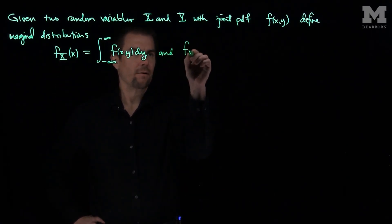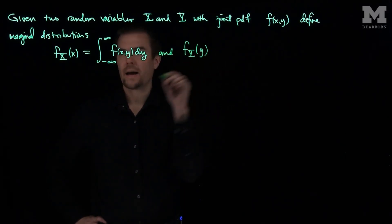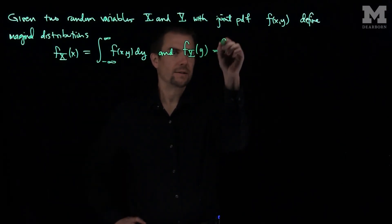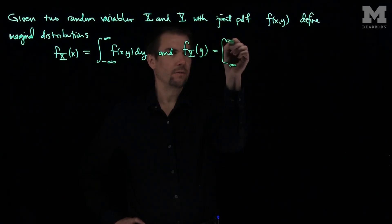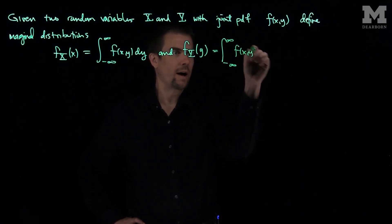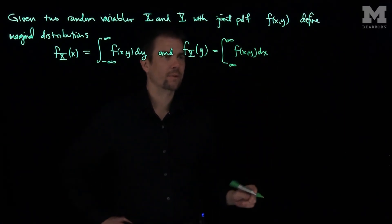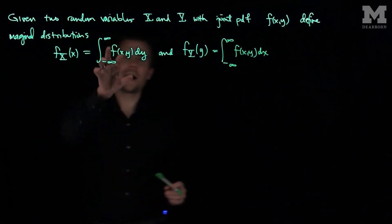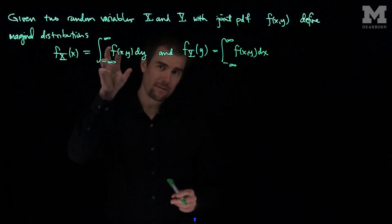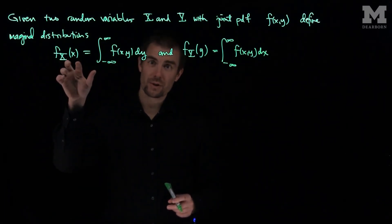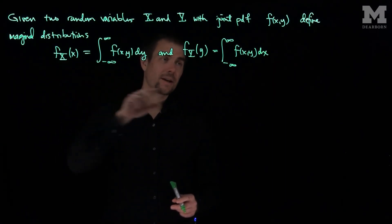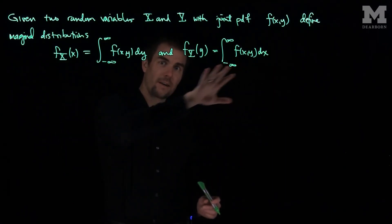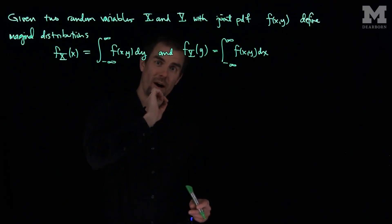And f_y(y) is the integral from negative infinity to infinity of f(x,y) dx. So if you integrate out all the y's from the joint pdf, you'll get a marginal distribution, which is the pdf for x. And if you integrate out all the x's in the joint pdf, you'll get a marginal distribution, f_y.